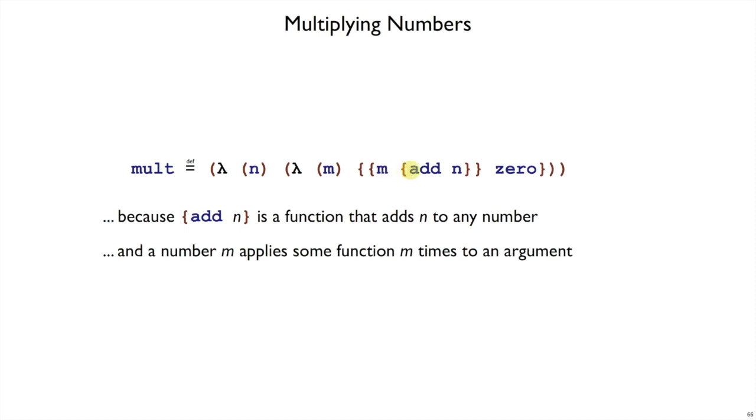So we're exploiting the fact that add is effectively curried. Add takes its first argument and then its second argument. So if we give it just its first argument n, we get a function that will add n to any other number. And if we use that function m times starting from 0, then we end up multiplying. So the same idea here as add we use to implement multiply. You could do power and so on.